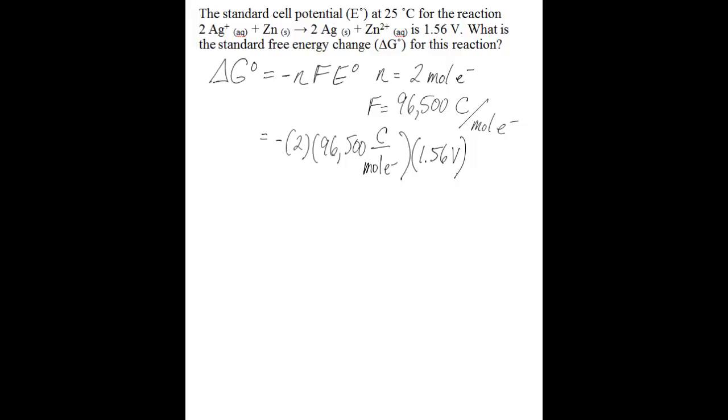You'll notice that the units don't quite work out here. So one other really important conversion to know is that there's 1 joule in 1 coulombs volt. You don't really have to do any additional math there because the actual value is 1, but you can see that your units will cancel out now. So the coulombs cancel out, the volts cancel out, and this is actually 2 moles of electrons, so the moles of electrons cancel out. You're left with units of joules, which you know is the unit for delta G-naught.